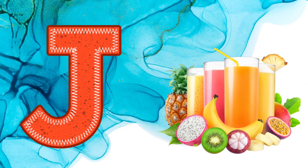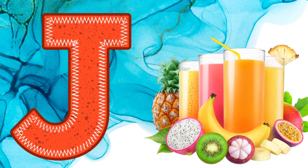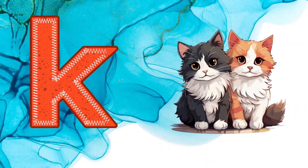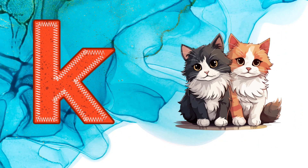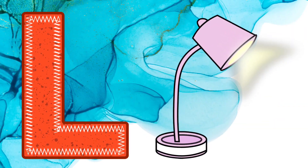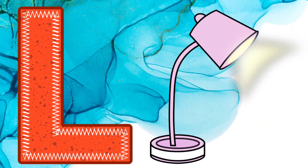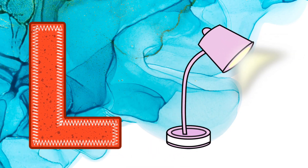I is for Igloo. J is for Juice. K is for Kitten. L is for Lamb.